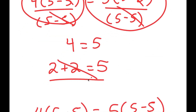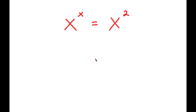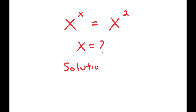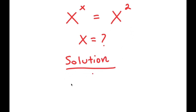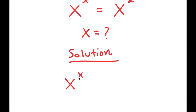So this means that 2 plus 2 is not equal to 5. Now, in this next problem, I have x to the power of x is equal to x to the power of 2, and I want to find the value of x.